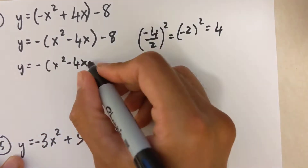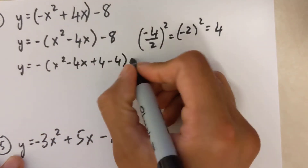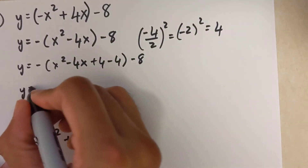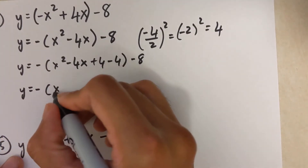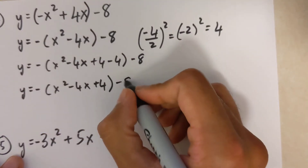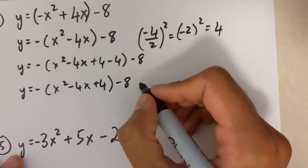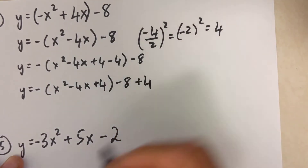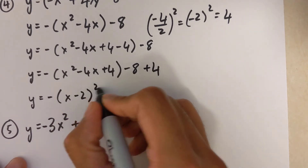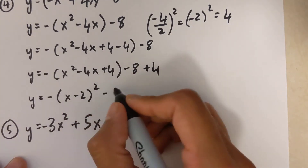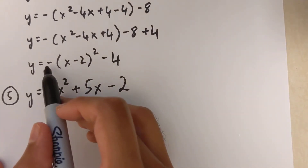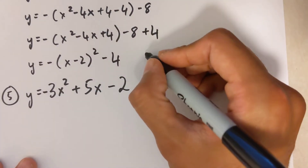Adding and subtracting 4 inside: y equals negative 1 times x-squared minus 4x plus 4 minus 4, minus 8. Moving the negative 4 outside means multiplying by the negative 1 out front, so negative 4 times negative 1 is plus 4. The perfect square factor is x minus 2 squared.